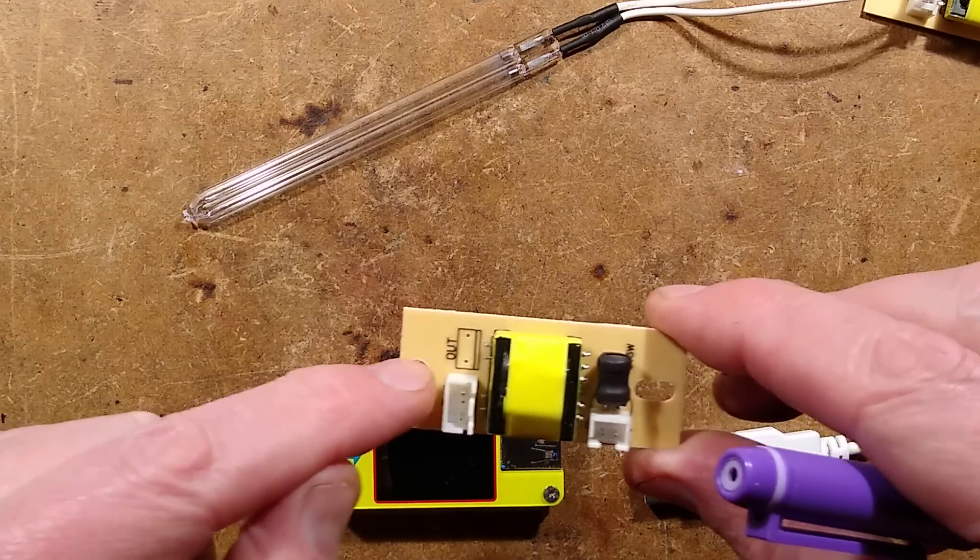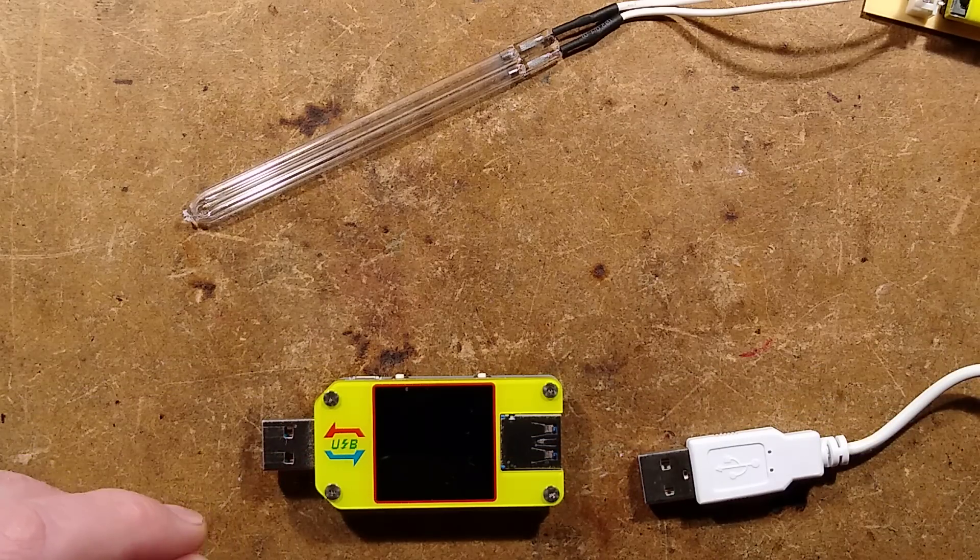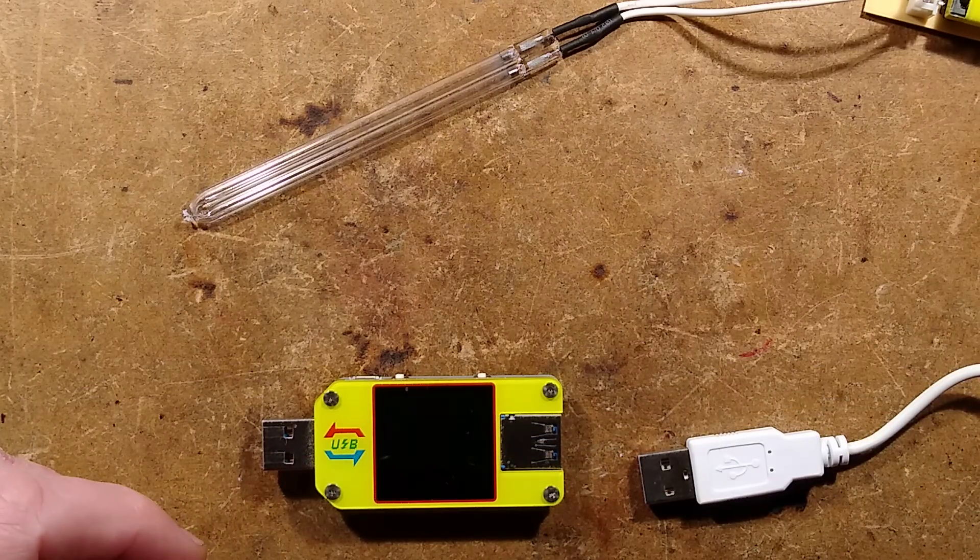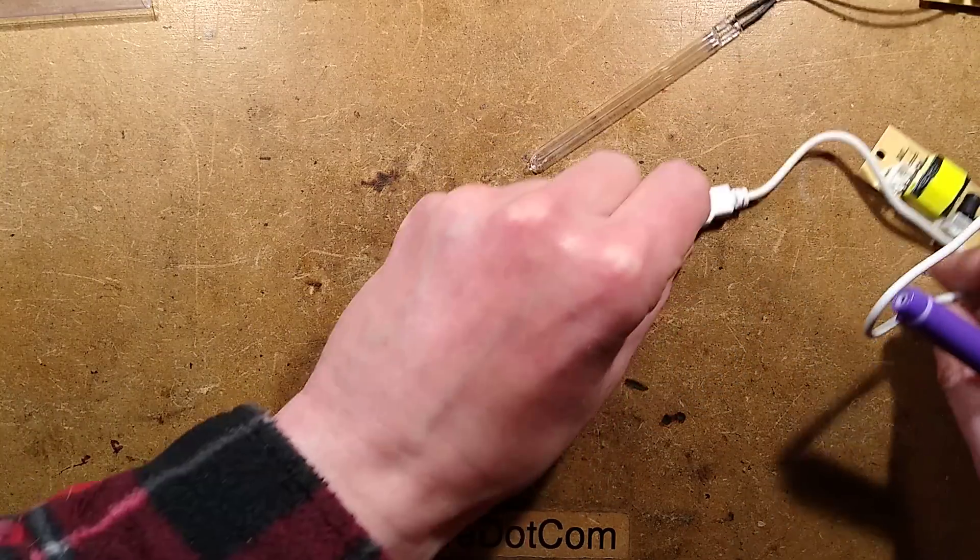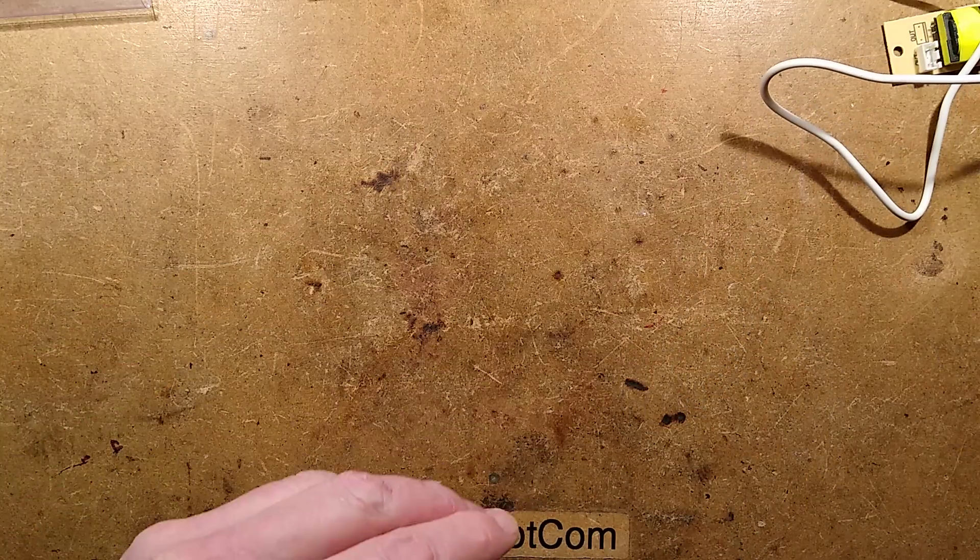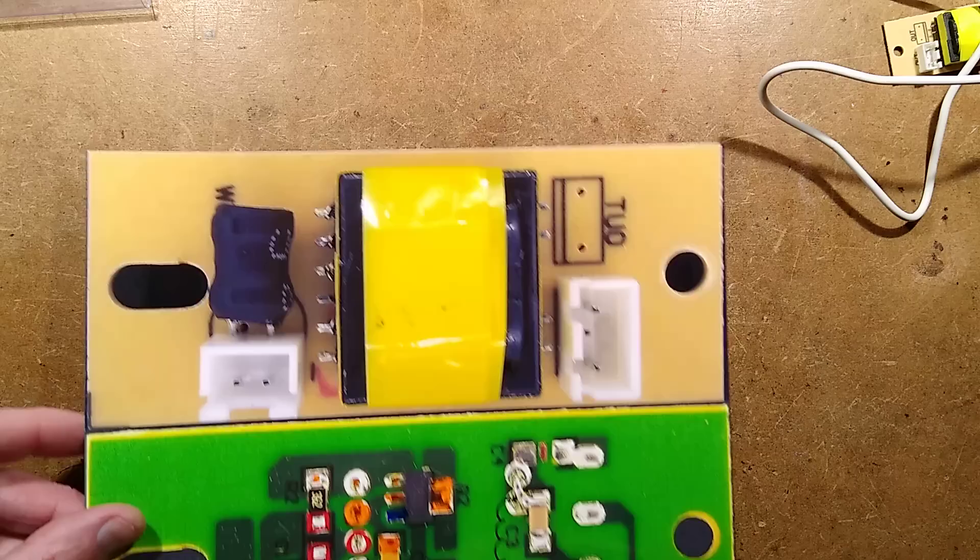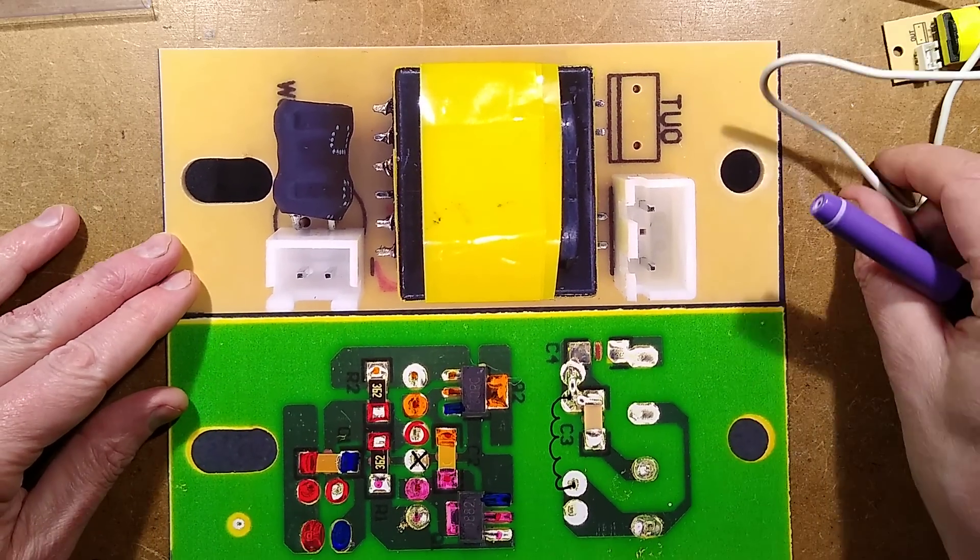Now I can cut straight to the chase here because it's a bare circuit board, so I've been able to take a picture already. Let me bring in exhibit number one. It is the interesting bit, the cold cathode power supply.